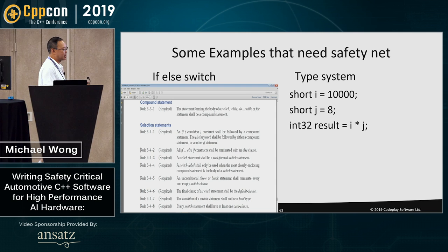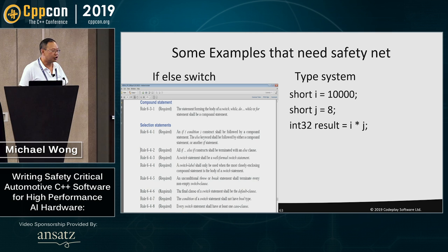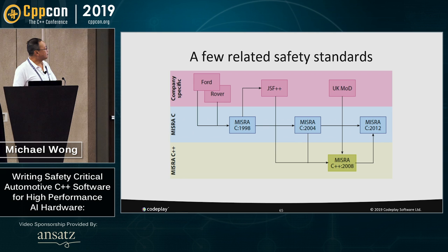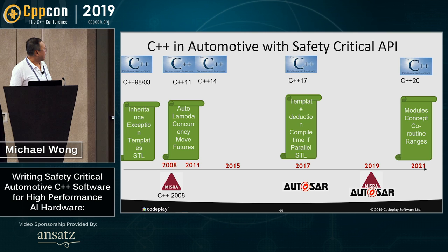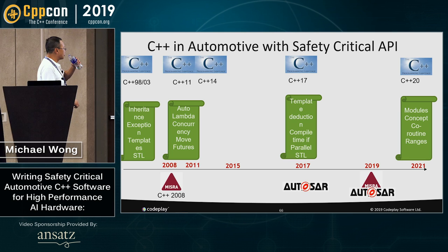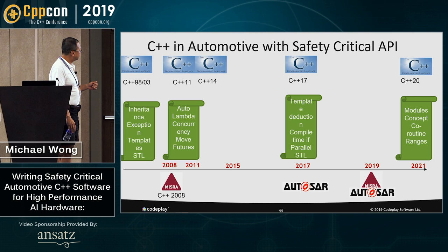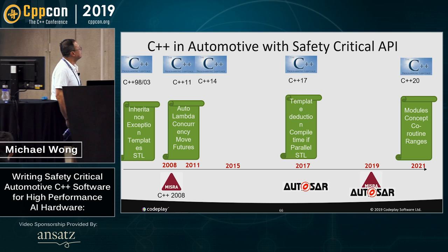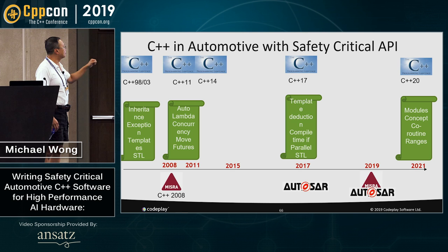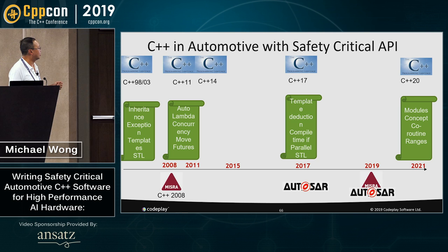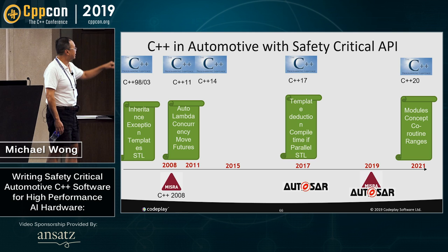These guidelines are not trying to create a subset of C++ — they're trying to create a safety net below which you should really think about and explain why you're crossing. In the automotive industry, AutoSAR has also been mentioned. MISRA is still based on C++03 — it was pre-C++11. Since then we have all these nice things like auto, lambda, concurrency, move semantics, template deductions, compile-time if, and parallel STL, and MISRA has not moved. AutoSAR has tried to move ahead to 2019, capitalizing on C++17 onward.